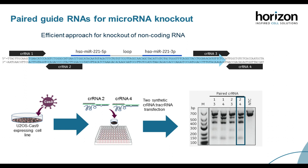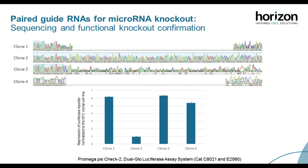We selected CRISPR RNAs 2 and 4 for single colony expansion. Sanger sequencing of four clones showed: clone 2 is wild type with no edit; clones 1 and 4 contain the expected deletion from excision by both CRISPR RNAs cutting; and clone 3 contains compound heterozygous indels between the two CRISPR RNA locations. A functional luciferase reporter assay confirmed that clone 2 behaves like wild type, while clones 1, 3, and 4 behave as knockout lines.